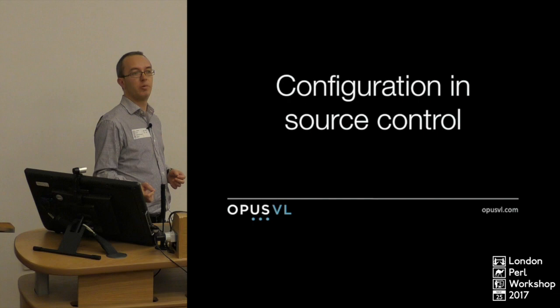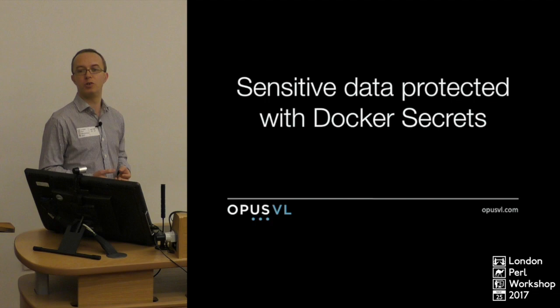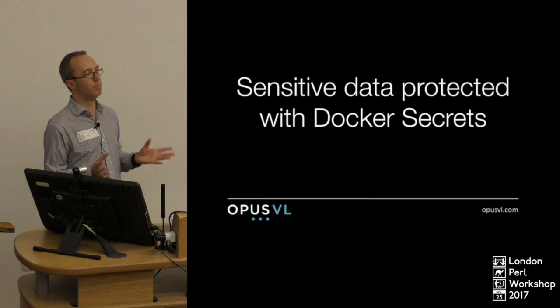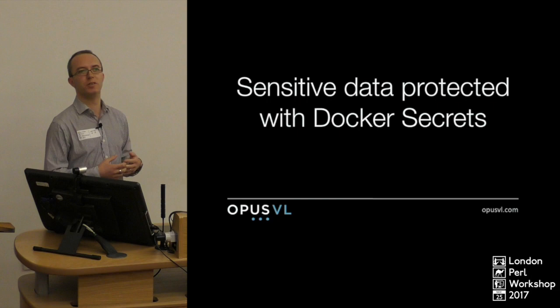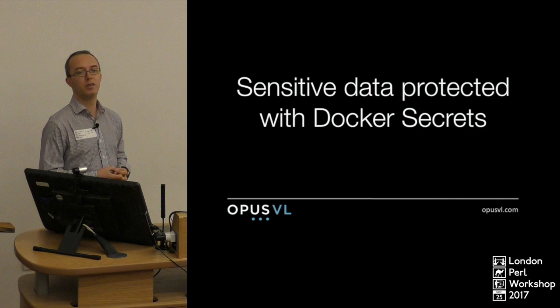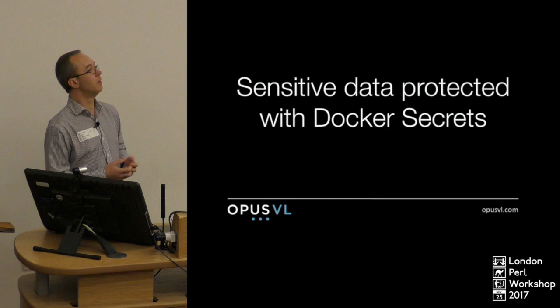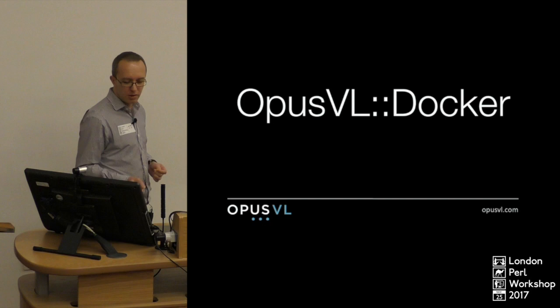With that approach we end up with the same Compose file everywhere — dev, production, and across a multi-tenanted environment. It keeps configuration in source control, and Docker provides a function called Docker Secrets, which allows sensitive parts of configuration — things like passwords and API keys — to be stored in an encrypted format. If somebody sees the raw data in the Git repository, unless they've got the key, they won't be able to see the values.